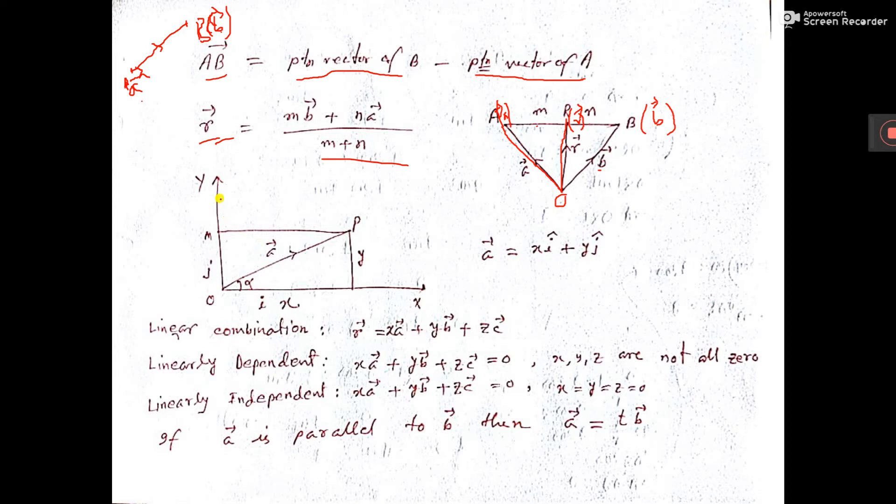Now, this is rectangular component of vector. This is x-axis, this is x-axis, this is y-axis, this is A vector. A vector we can write x i plus y j, where i is the unit vector along x direction, O x direction, and j is the unit vector along O y direction.